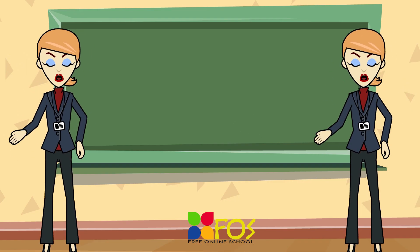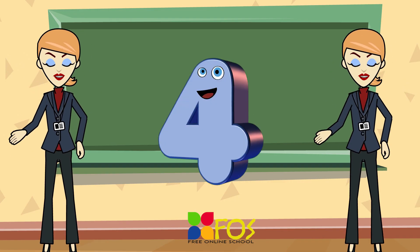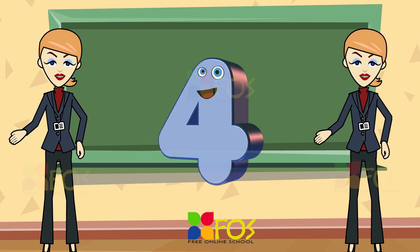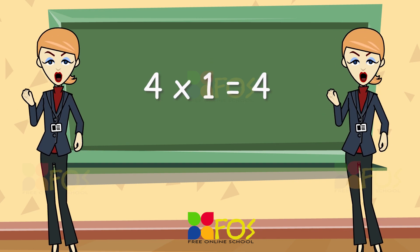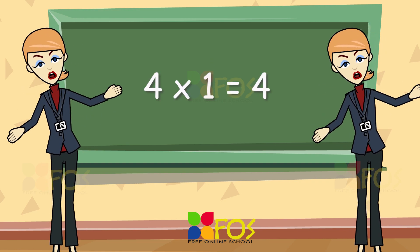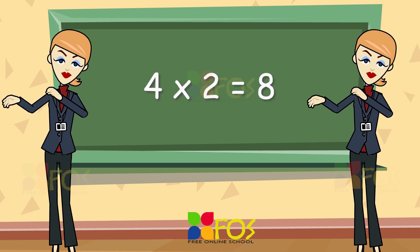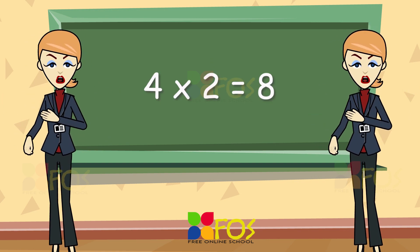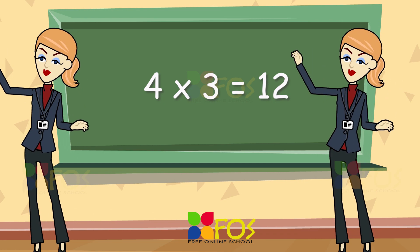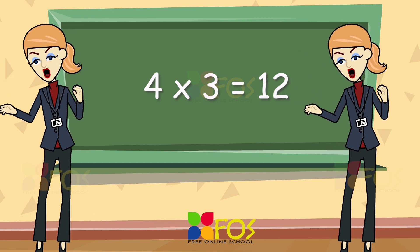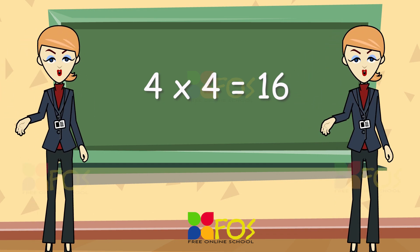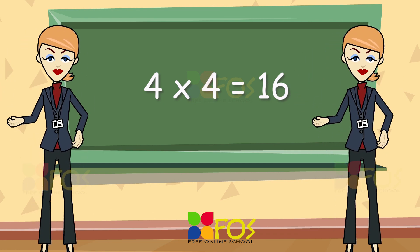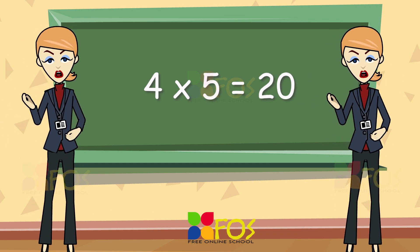Here is the table of four. Four ones are four. Four twos are eight. Four threes are twelve. Four fours are sixteen. Four fives are twenty.